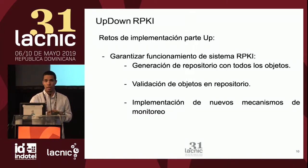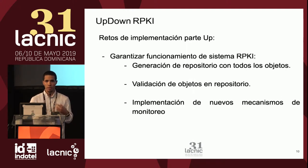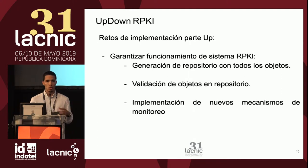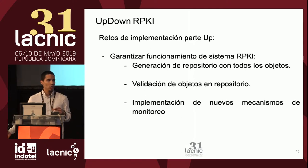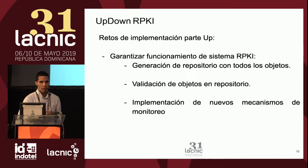Retos de la implementación en la parte de APP. El reto más importante es garantizar el funcionamiento del ecosistema RPKI — es decir, todo lo que está funcionando actualmente de RPKI por parte del server, la CA de la LACNIC, quede funcionando de igual forma. Acá se debe generar el repositorio con todos los certificados, tanto de los de UpDown como los de modo hosteado, y validar todos estos objetos. Además, se deben implementar nuevos mecanismos de monitoreo, ya que si alguno de estos certificados de UpDown llega a fallar, es importante identificarlos y reportarlos directamente con el cliente.